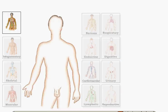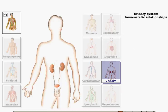The urinary system helps maintain body homeostasis by regulating the volume, composition, and pH of body fluids.